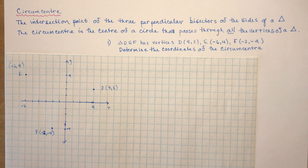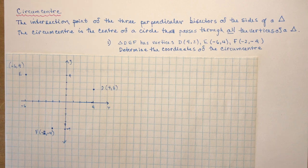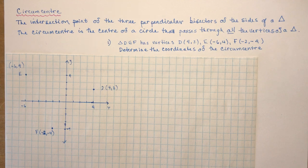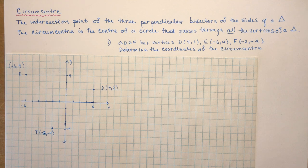I'm going to do two different examples: in one, the circumcenter is inside the triangle, and in one it's outside the triangle, so I want to make sure you understand it can be in either location. After circumcenter we'll also look at the orthocenter and the centroid — three separate lessons. The first example is triangle DEF, which I have drawn on the grid.